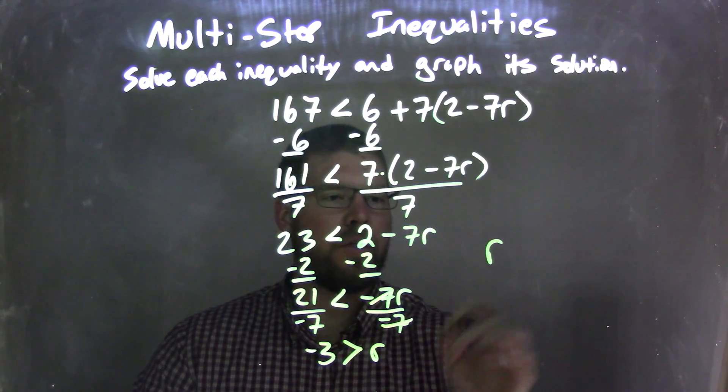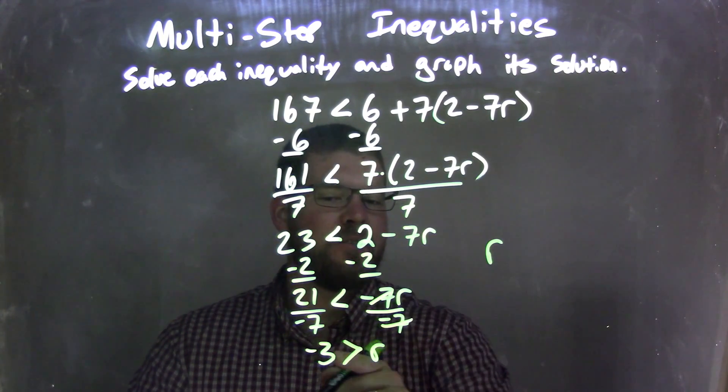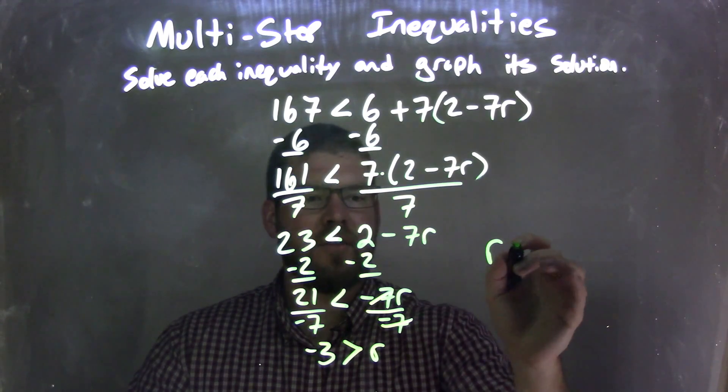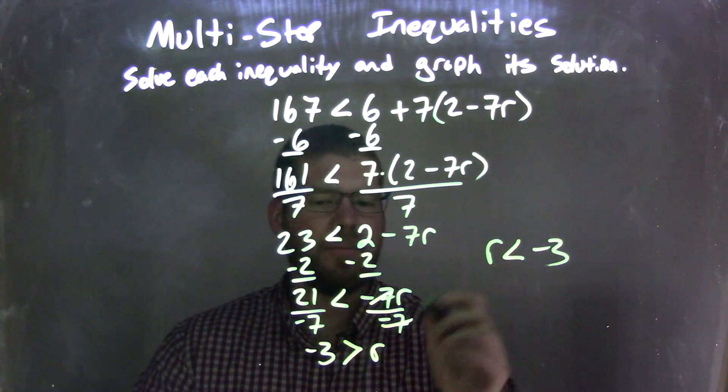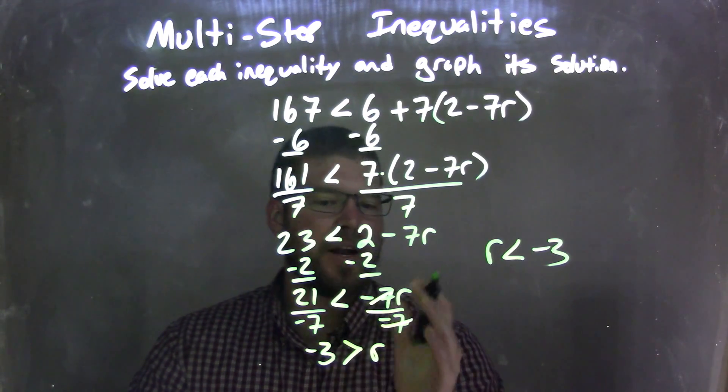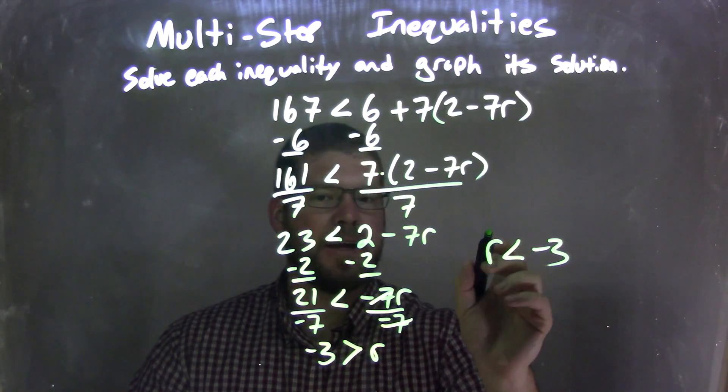But I'm not done because I want to rewrite this so r comes first. If r is coming first, instead of negative 3 being greater than r, I have r is less than negative 3. These two statements are the same, but when you rewrite it with r first, you need to flip that inequality again.